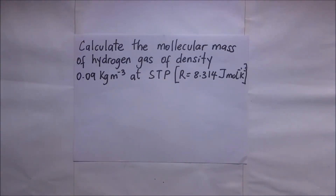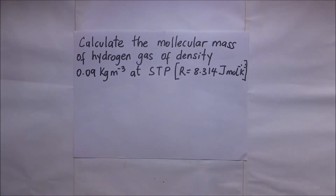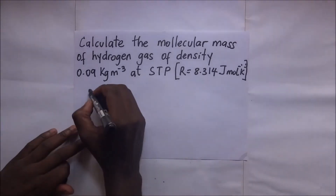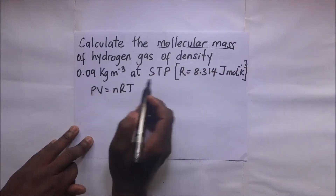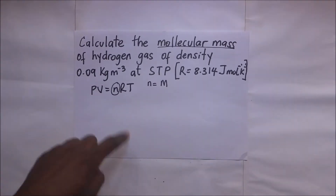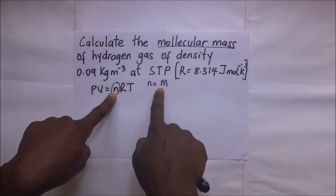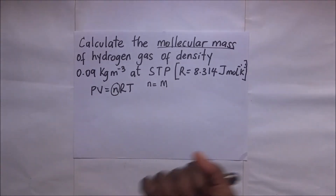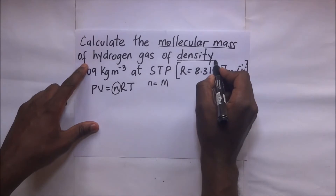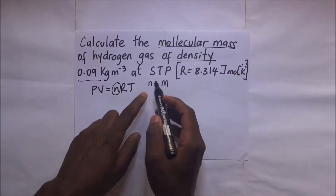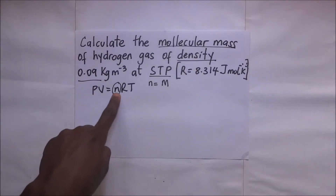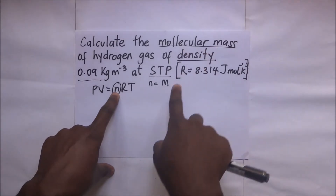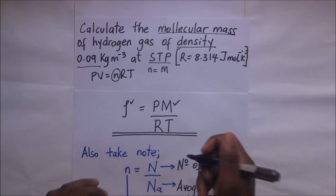In this next question, they ask us to find the molecular mass of hydrogen gas given its density at STP. We're still working with PV = nRT. The molecular mass comes from the value of n, and since we're given density and standard temperature and pressure, we'll use the density expression ρ = PM / RT to find M.